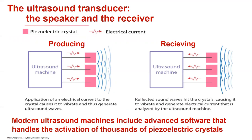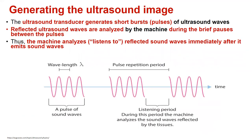If we apply an electrical current to the crystal, it causes it to vibrate and generate ultrasound waves. The reflected sound waves hit the crystals again, causing them to vibrate and generate electrical current that will be analyzed by the ultrasound machine. The ultrasound transducer generates short bursts or pulses of ultrasound waves, and the reflected waves are analyzed during the brief pauses between the pulses.